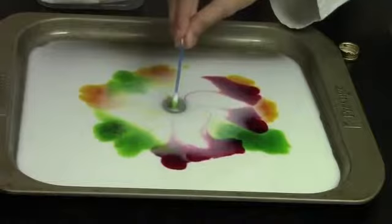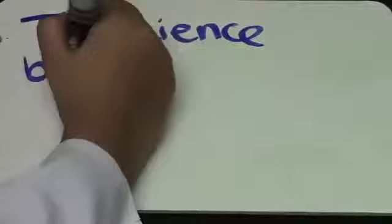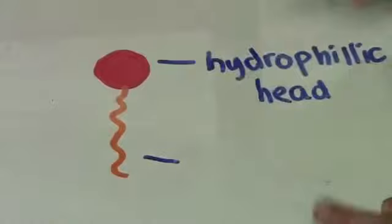Wow! Now for the science behind the magic. The anatomy of a soap molecule: a soap molecule is made up of two parts, a head and a tail. The head is called the hydrophilic head, and the tail is called the hydrophobic tail.